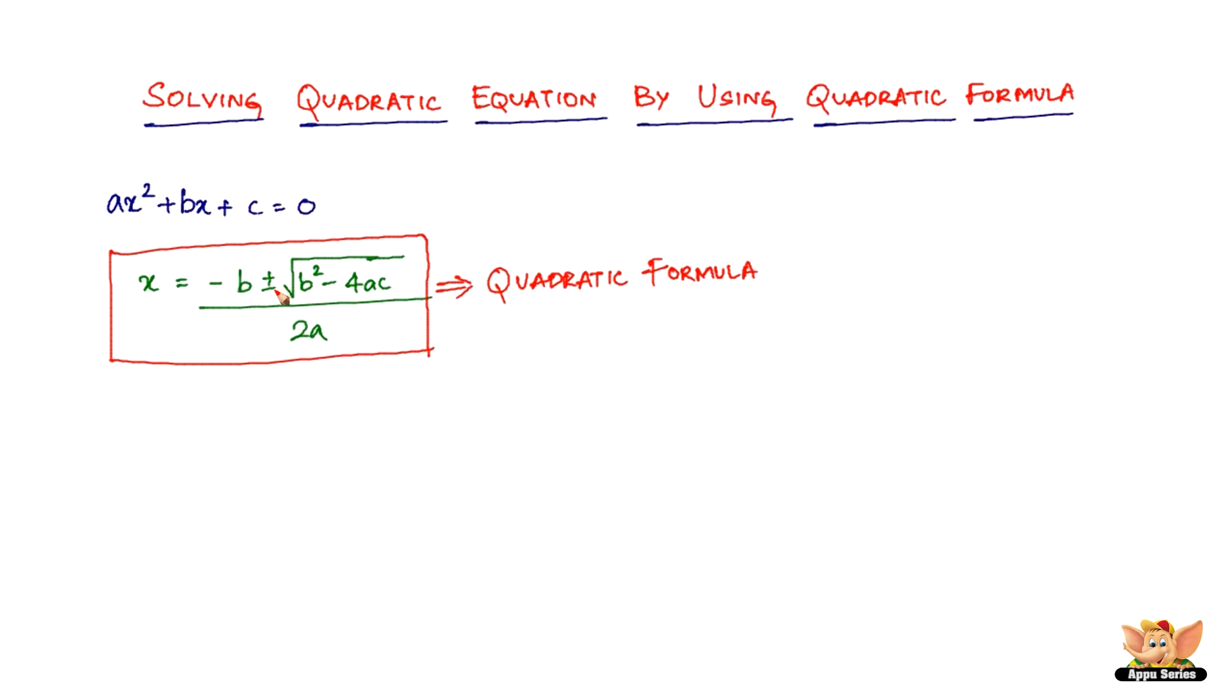The b is negative b here, then plus or minus square root of b squared. Substitute the value of b here, then 4 times ac, the value of a and c here, then divided by 2a. On solving this, you find the roots of the quadratic equation.